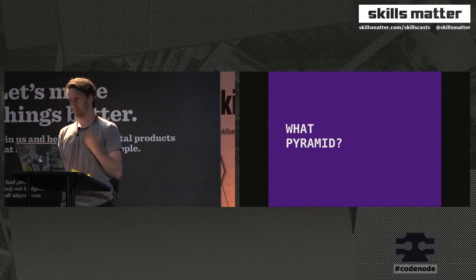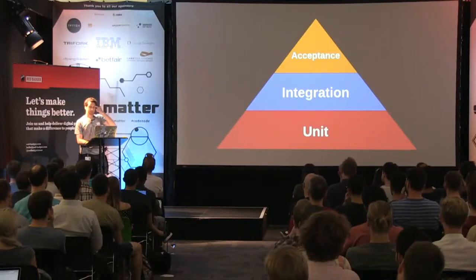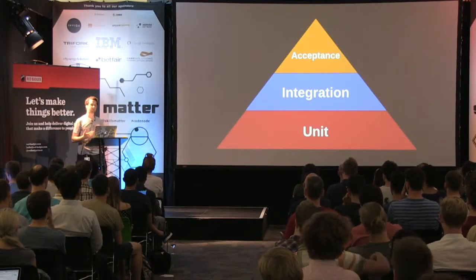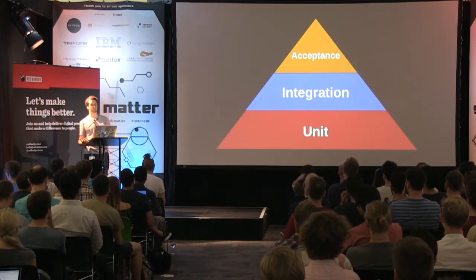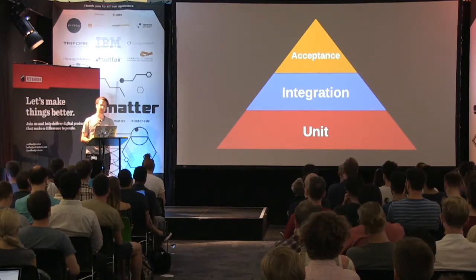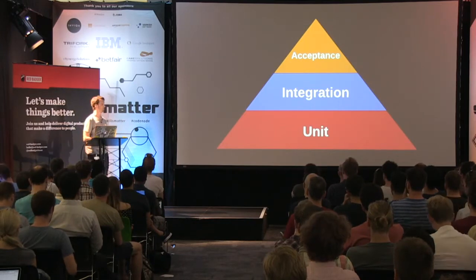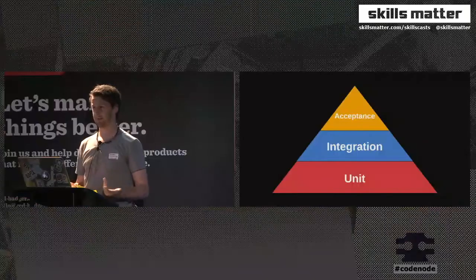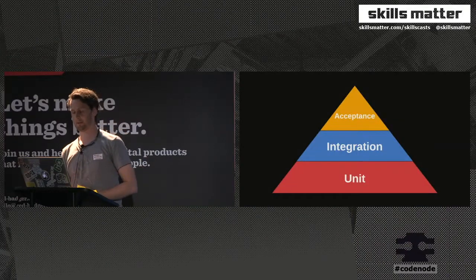So first, what pyramid? You're probably quite familiar with this pyramid. If you're not, it's essentially just trying to give people some direction about how many tests to write and what type of tests to write. The bigger the area of the pyramid, the more you do it — so you do the most unit tests and the least acceptance tests. This isn't just for front-end development; this is for all software.